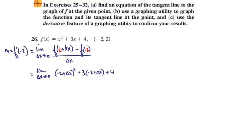We get negative 2 plus delta x squared plus 3 times negative 2 plus delta x plus 4. That's f of negative 2 plus delta x. Then we subtract f of negative 2, which from the point given is 2. That saves us a little trouble. And it's all divided by delta x.